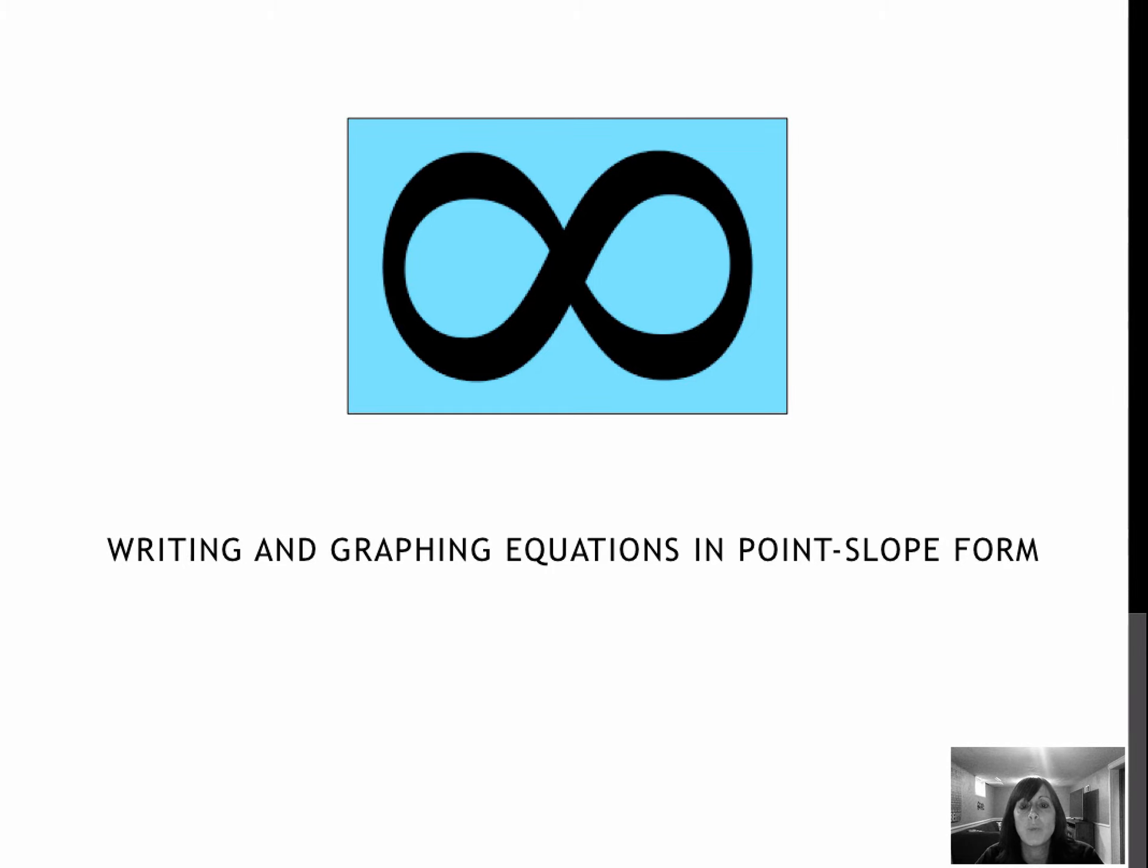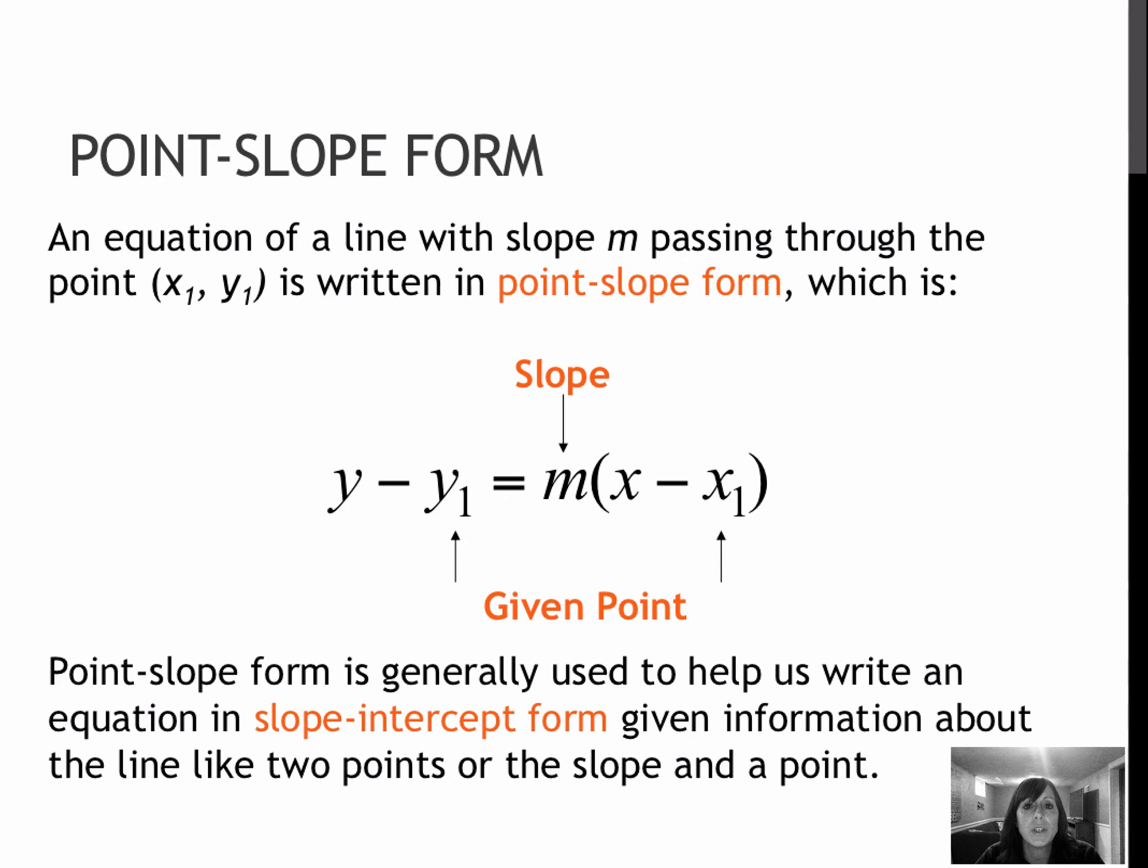This lesson is on writing equations in point-slope form and then using those to graph the line of the equation. Point-slope form is just another form that we will use, and it is really a form that we will only use when they ask us to write an equation. So whenever they ask us to write an equation, you should automatically think, let's start in point-slope form. There are exceptions, obviously, to the rule. If there's a horizontal line or a vertical line, you will not use point-slope form. But this is a form that helps us whenever we are given either two points or a point and a slope. It helps us to find the equation of the line between two points.